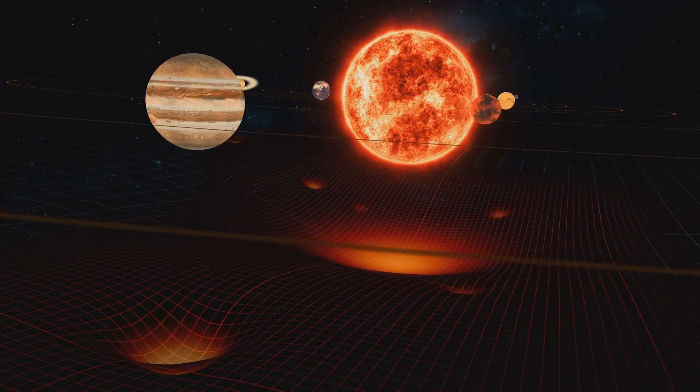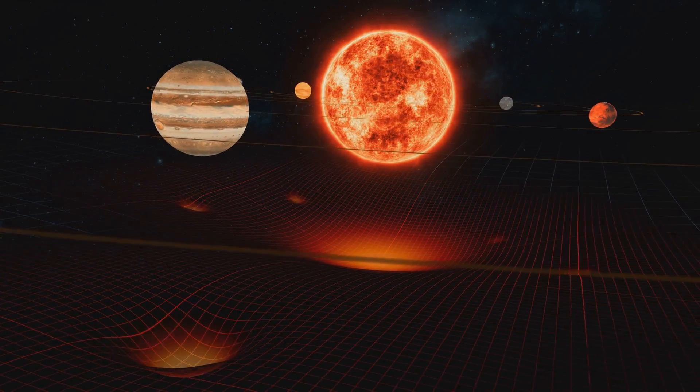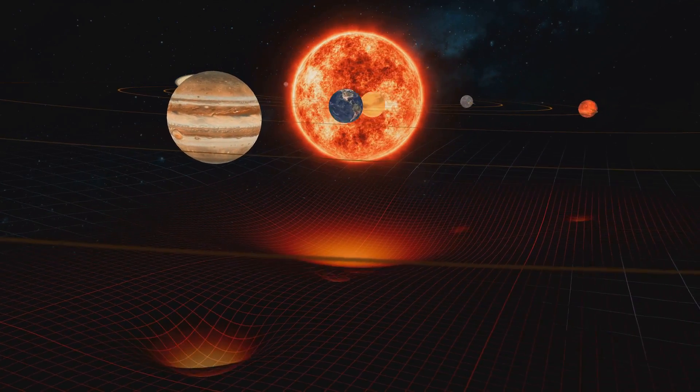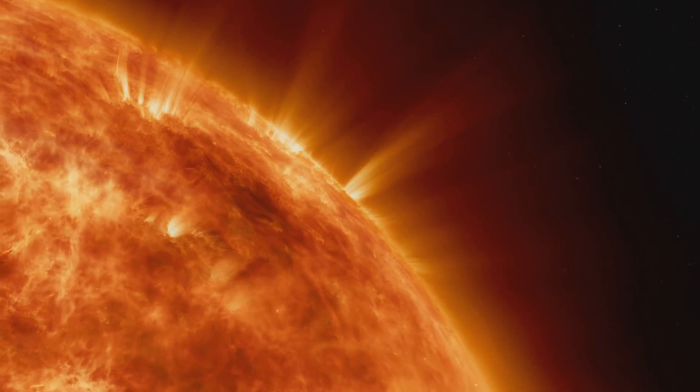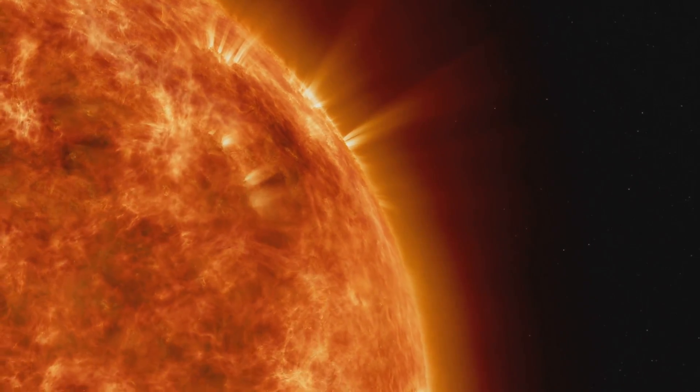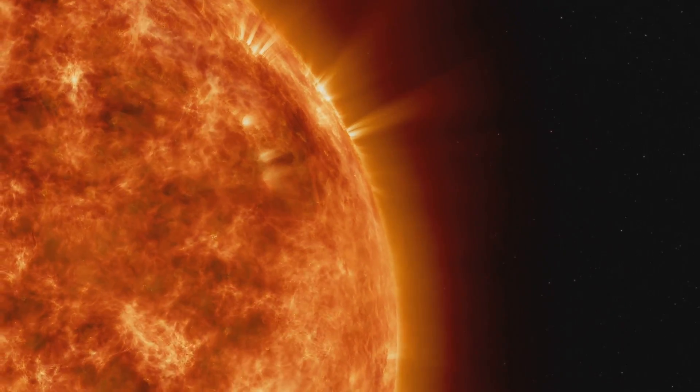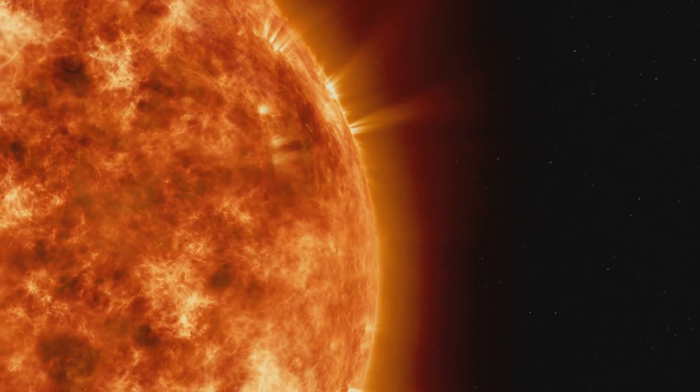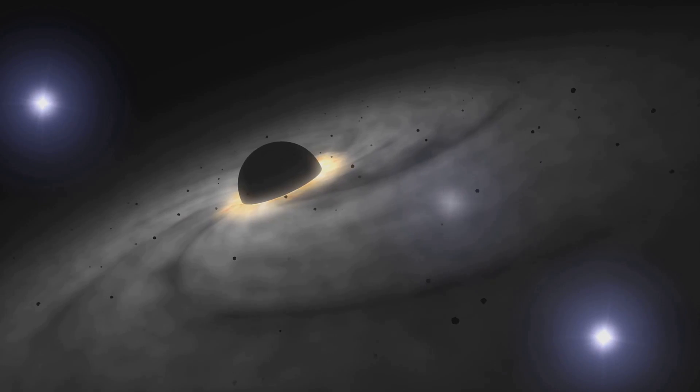Yet another theory, a rather unconventional one, suggests that Mercury's magnetic field is not due to a dynamo effect at all. Instead, it might be due to the solar wind, a stream of charged particles emitted by the Sun, interacting with the planet's iron-rich crust.